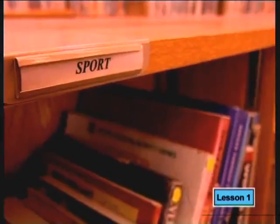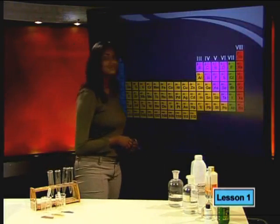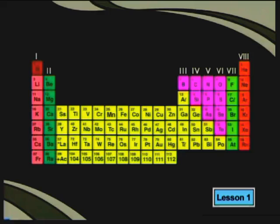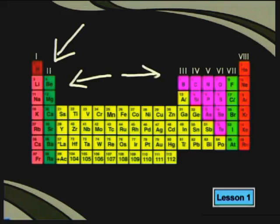Here you can see that books of the same sort are placed in categories together. One of the most useful documents that chemists use is the periodic table. You have seen the periodic table in previous series of chemistry lessons. Remember, elements are sorted and arranged in groups — these are the vertical columns. On the left-hand side are the metals, and on the right-hand side, the non-metals.